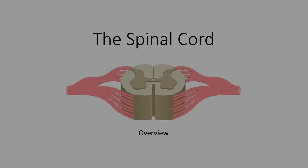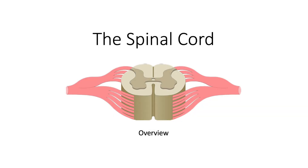The spinal cord, along with the brain, is part of the central nervous system. It is composed of delicate nervous tissue and bears unique anatomy when we look at it overall and then in cross-section.